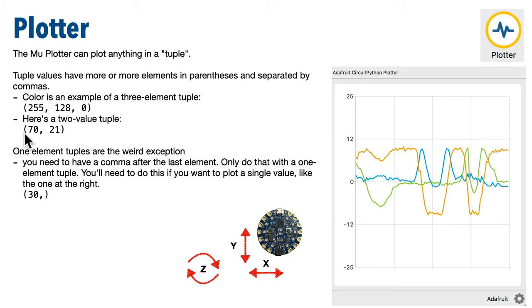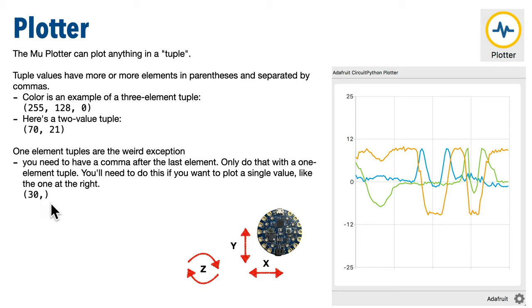Here is a two-value tuple. You can even have a tuple with a single element — just make sure that you have a comma after that one element and before the closing parentheses. You have to have the trailing comma for a single element tuple in Python. It's weird, but that's just the quirky Python standard for single-value tuples.